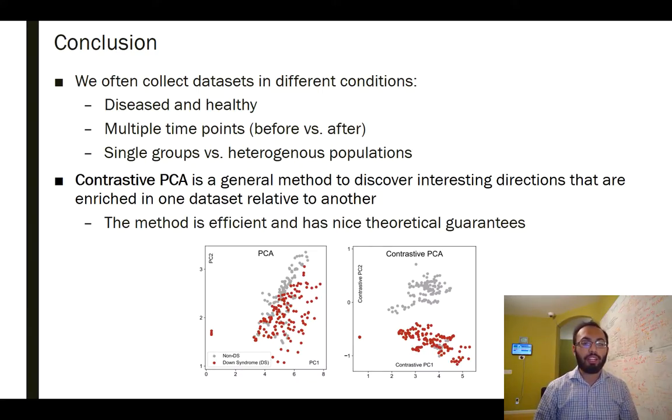So with this, I'll go ahead and conclude. In these past few videos, I've provided an overview of contrastive PCA. The idea again is that oftentimes we collect data sets in different conditions. You might have diseased patients that you collect data from as well as healthy patients. You could have multiple time points. You can have single groups versus heterogeneous populations. And contrastive PCA is a general method that allows us to discover interesting directions that are enriched in one of your data sets relative to the other.